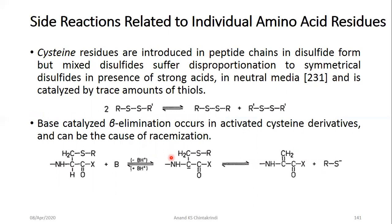Cysteine residues are introduced in the peptide in the disulfide form — the cysteine side chain is protected as a disulfide; however, this can result in formation of symmetrical disulfides, where the bond is cleaved and two cysteine residues bond to each other. We have also seen base-catalyzed beta elimination — the reaction initiated by proton abstraction in activated systems to form dehydroalanine derivatives.